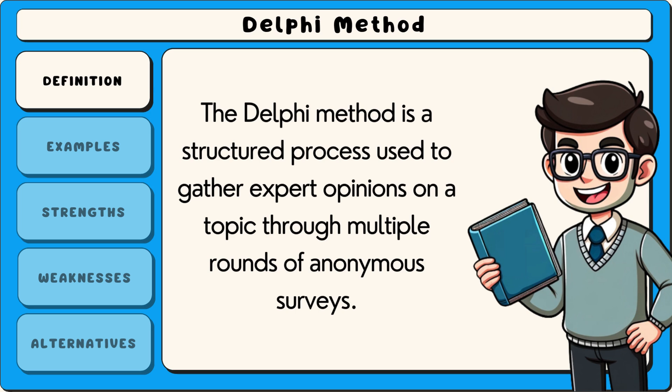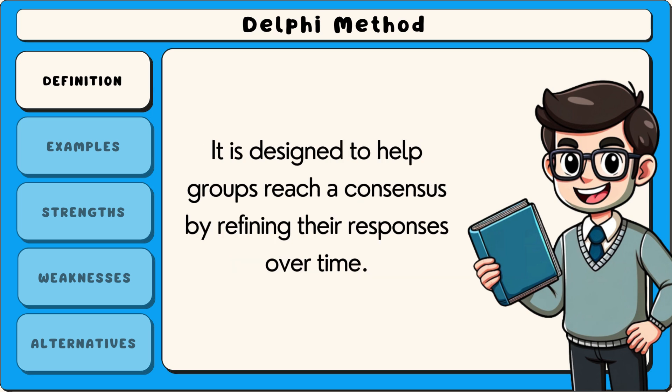The Delphi method is a structured process used to gather expert opinions on a topic through multiple rounds of anonymous surveys. It is designed to help groups reach a consensus by refining their responses over time.